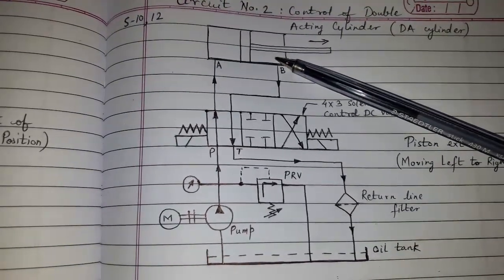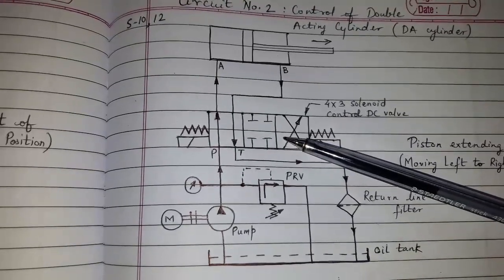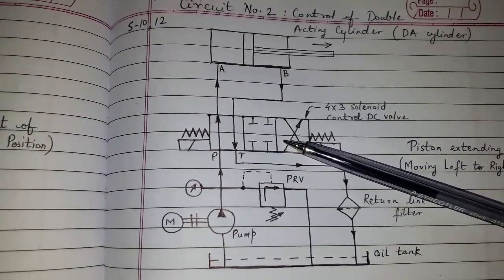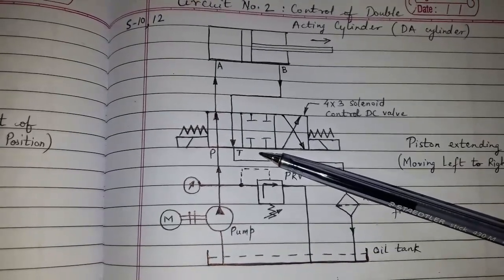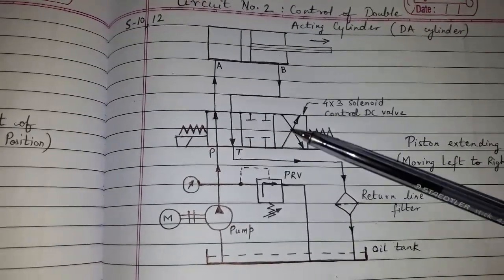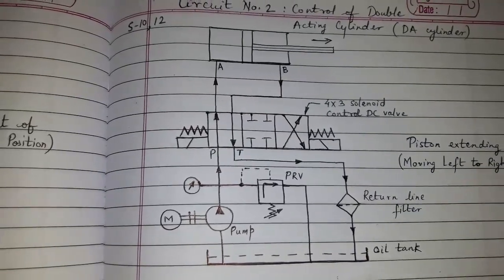Here, there is no spring on the piston rod. Here it is using a 4x3 solenoid control DC valve. 4 because it has 4 ports or 4 connections. 3 because it has 3 positions.